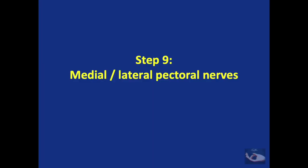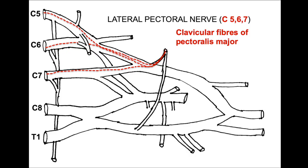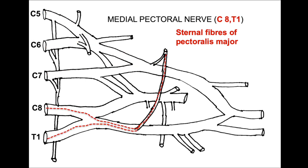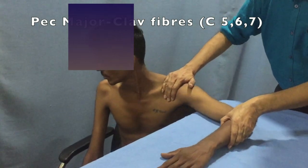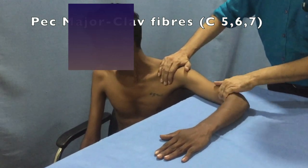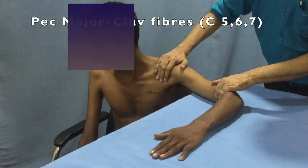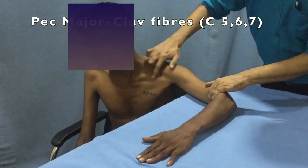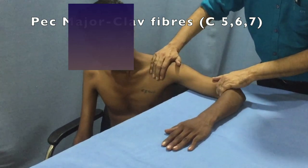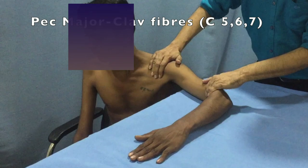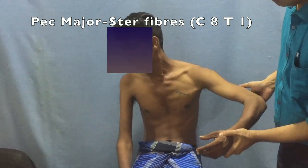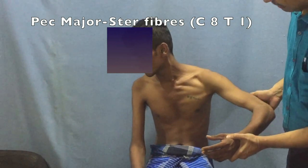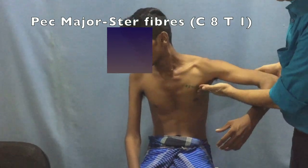The medial and lateral pectoral nerves together supply the pectoralis major muscle. The lateral pectoral nerve supplies the clavicular head and the medial pectoral nerve supplies the sternal head. To test the clavicular fibers, the patient sits with the shoulder abducted to 90 degrees, elbow partially flexed and palm facing downward; while palpating the upper fibers of pectoralis major, the patient is asked to move the entire upper limb forward. To test the sternal fibers, the patient is asked to move the unsupported arm towards the opposite hip.